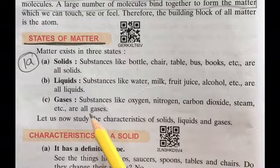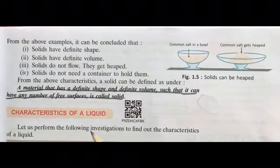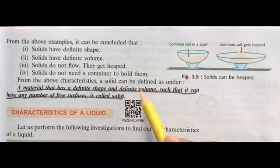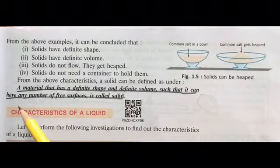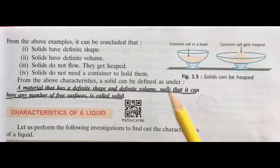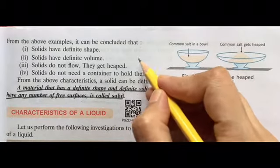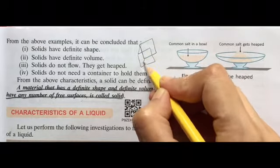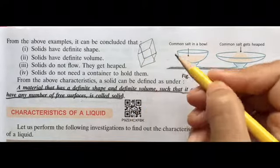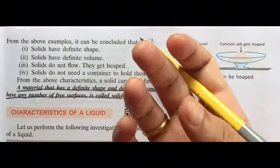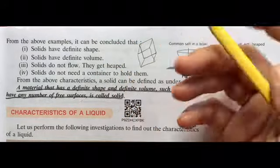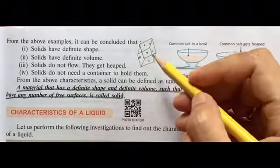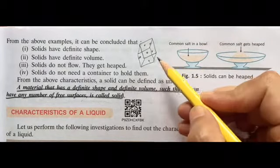Let's take the first state: solid. A material which has definite shape, definite volume, and such that it has any number of free surfaces is called solid. For example, if you take a dice, it has a definite shape, its shape is fixed.